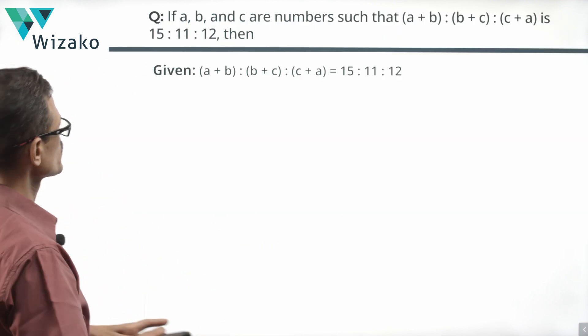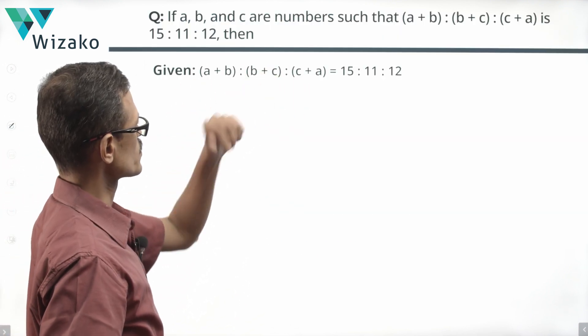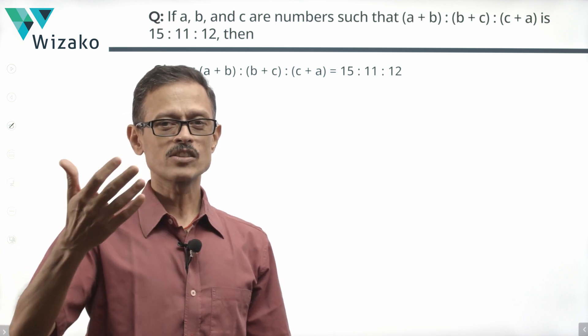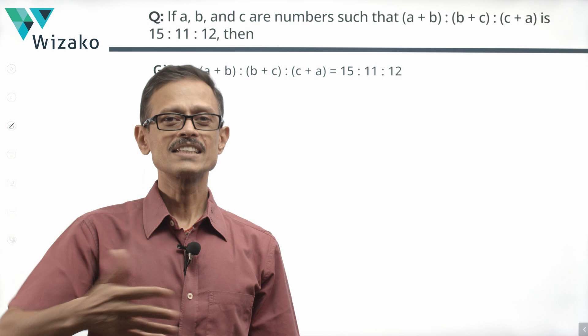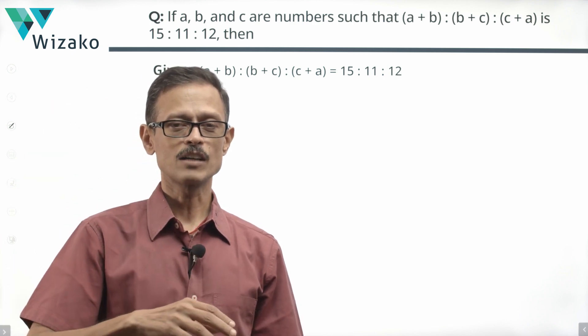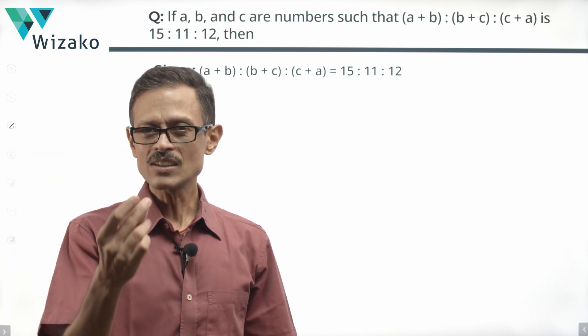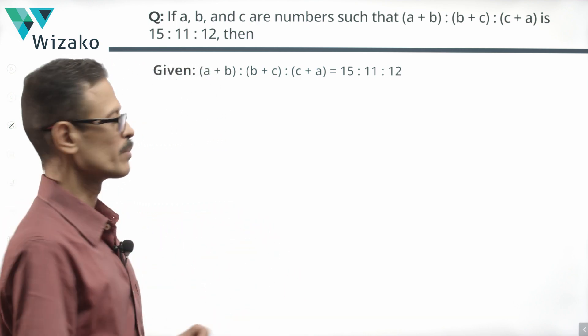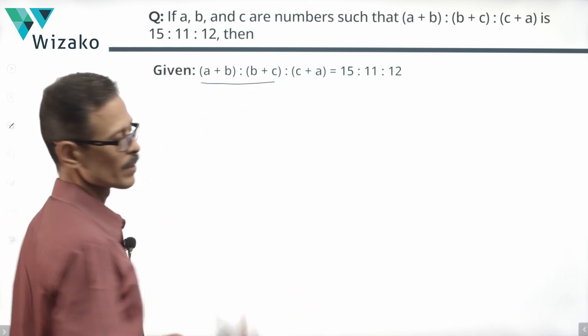Take a look at the ratio. The ratio is basically (a+b):(b+c):(c+a) is 15:11:12. Probably you might have entertained the thought saying we need to compute a:b:c and then figure out whether a is greater or c is greater. And then in a minute or less, you would have realized that I don't need to find a:b:c. All I need to probably do is compare the first two components of this ratio.